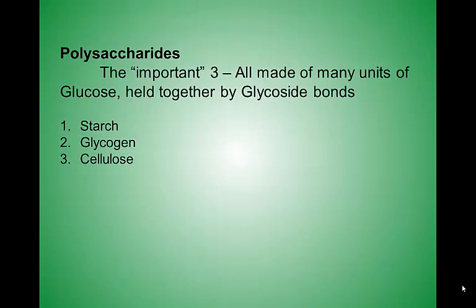Now that you're aware of how disaccharides are formed and what a glycosidic bond is, we'll look at three common polysaccharides: starch, glycogen, and cellulose. They are all composed of many glucose units held together by glycosidic bonds. I want you to identify the glycosidic bond and determine if it's alpha or beta.